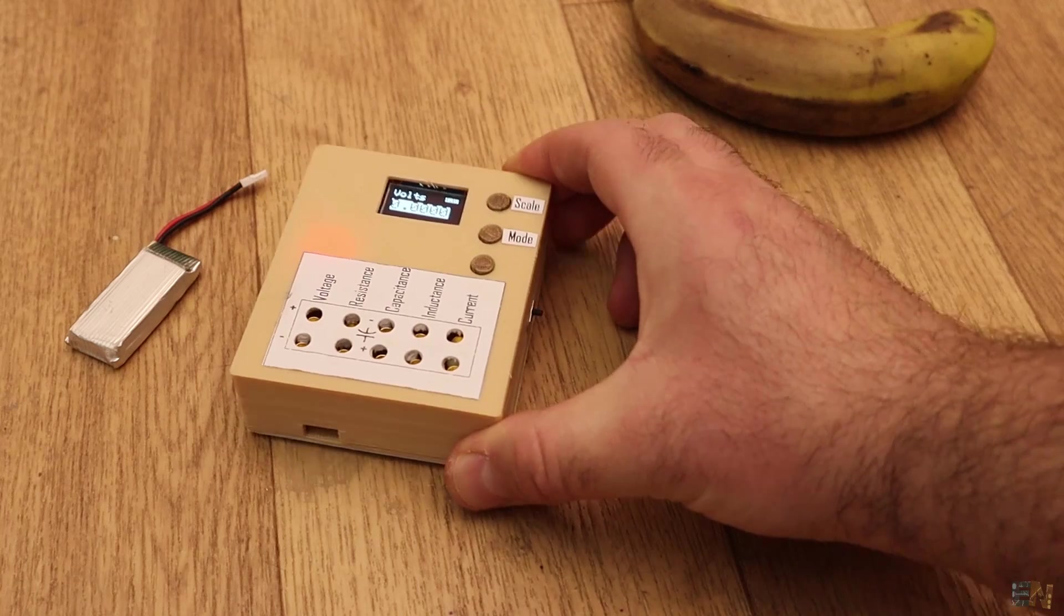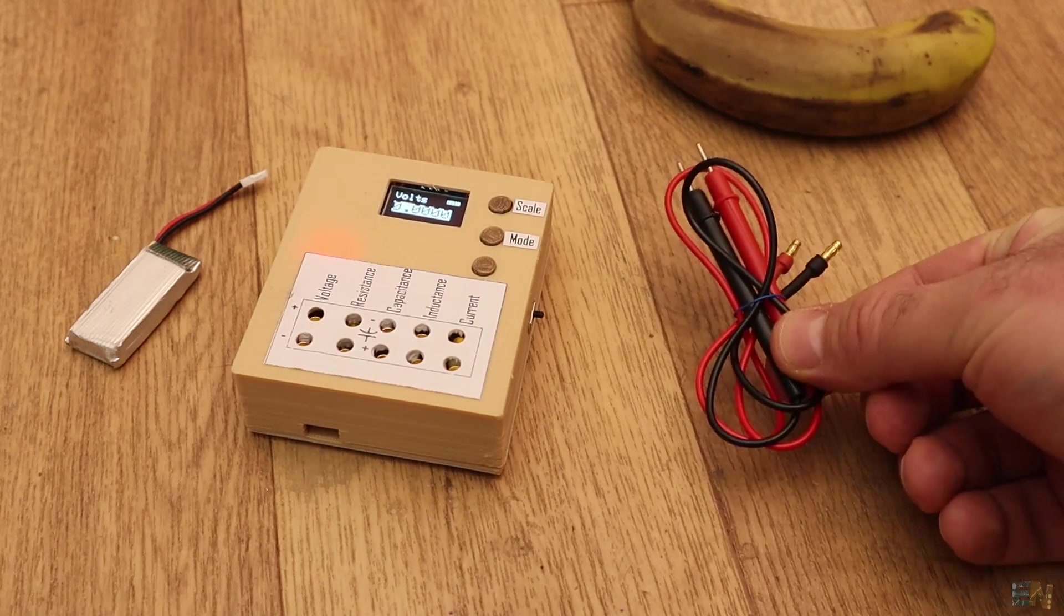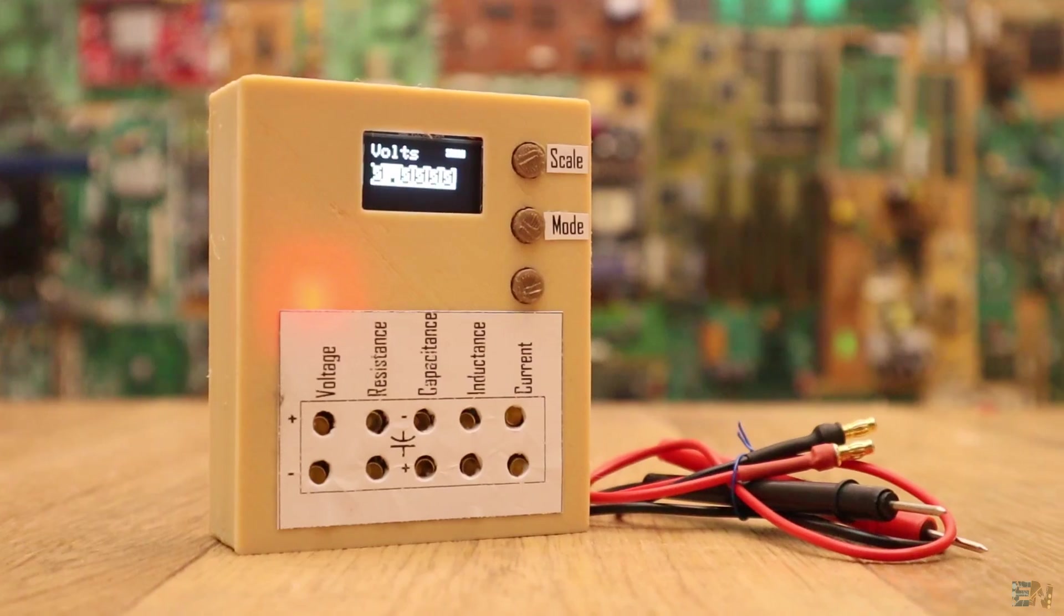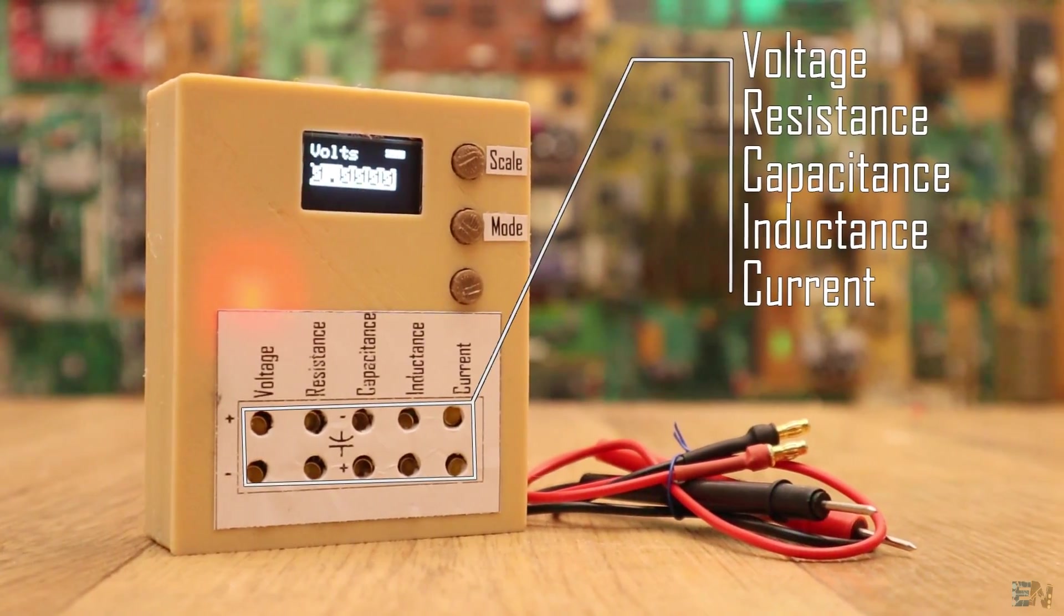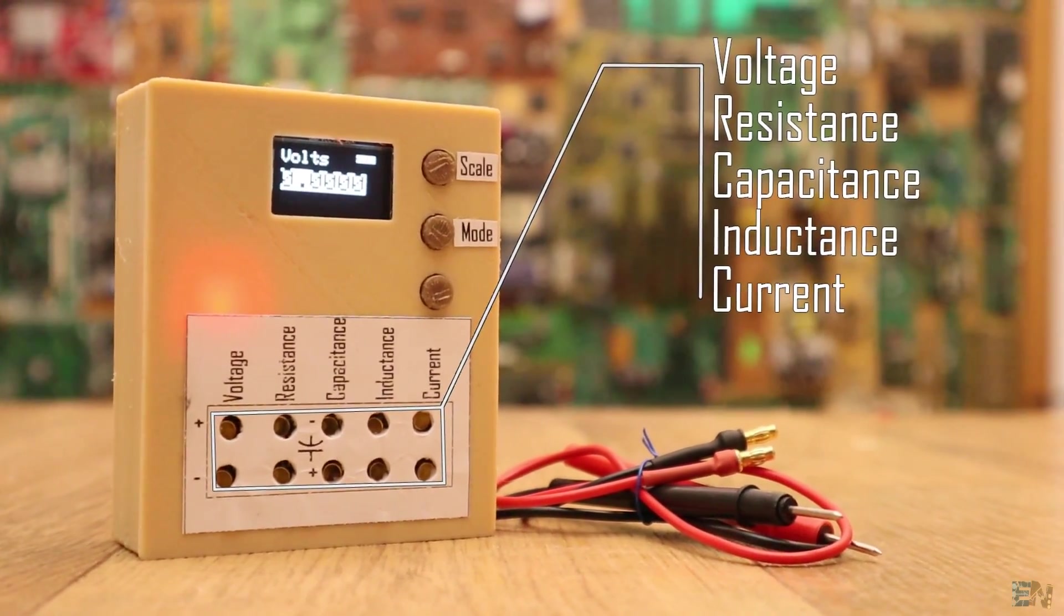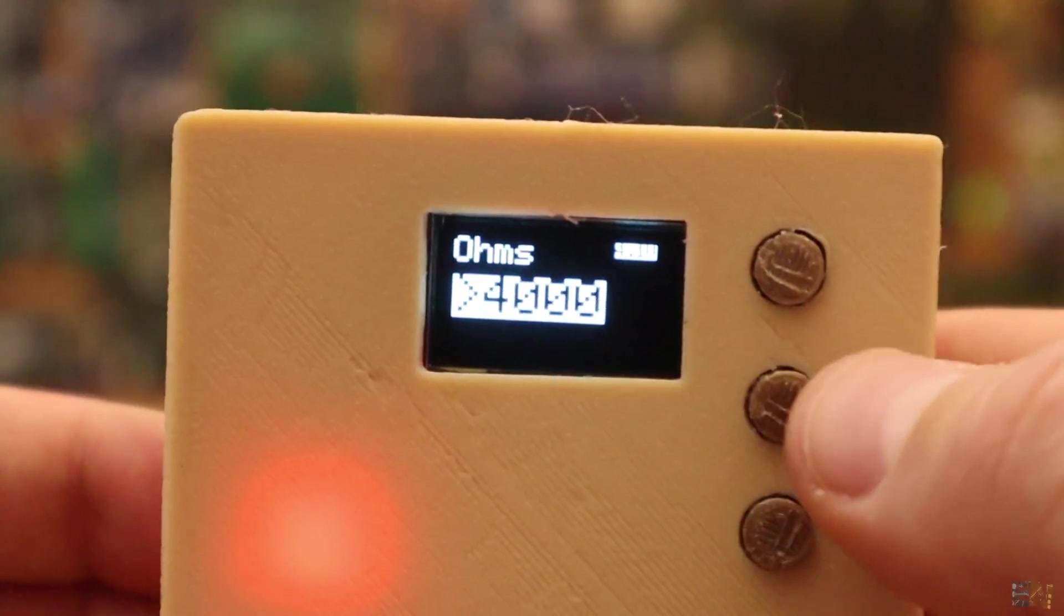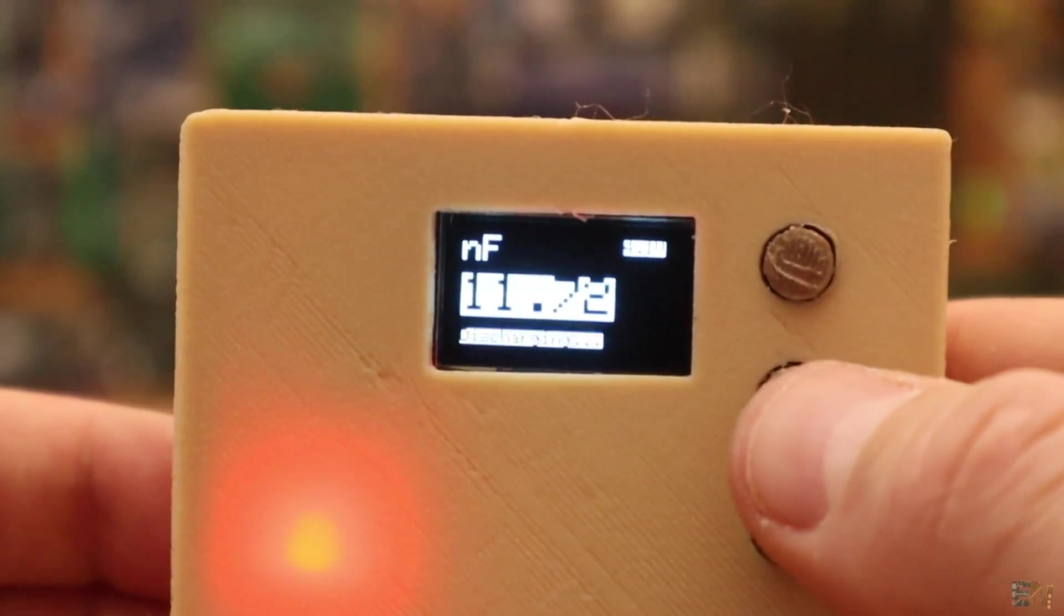What's up my friends, welcome back. This is my homemade multimeter. As you can see, we have 5 different inputs since having the same input for all the measurements would be quite difficult to make. It uses an OLED screen to show the values and 3 push buttons to change the mode or scale.